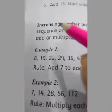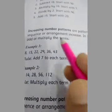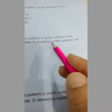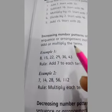I will explain increasing number pattern and decreasing number pattern. Increasing means to grow or expand. Increasing number patterns are patterns in which numbers of the sequence or arrangement increase. In increasing number patterns, we add or multiply the terms.